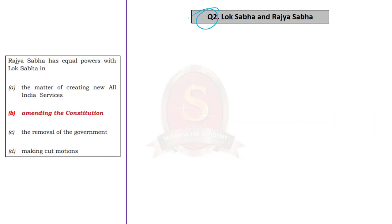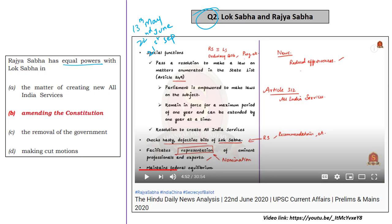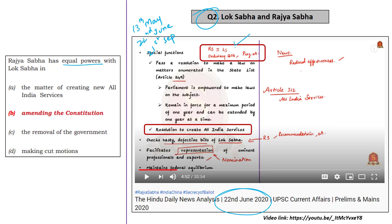The second question in Set A is about powers of Rajya Sabha compared to Lok Sabha — specifically where Rajya Sabha has equal powers with Lok Sabha. We have discussed about Rajya Sabha and its powers many times: on 13th May 2020, 22nd June 2020, and 21st September 2020. On 22nd June 2020, we orally stated that Rajya Sabha is placed on equal footing with Lok Sabha in terms of passage of ordinary bills and constitutional amendment bills. So through this, you can easily arrive at the correct answer, which is Option B — amending the constitution.